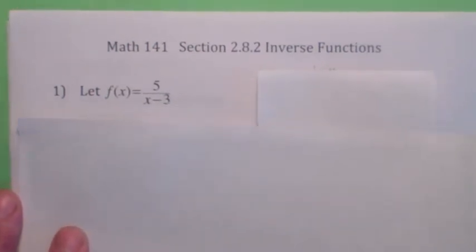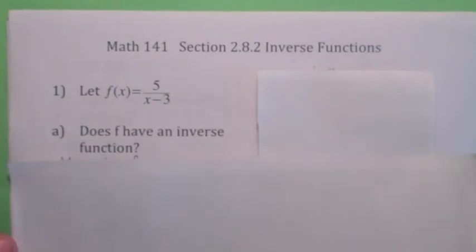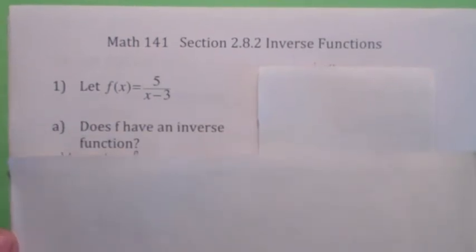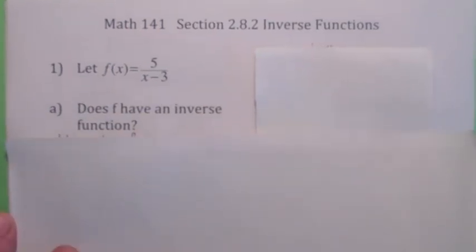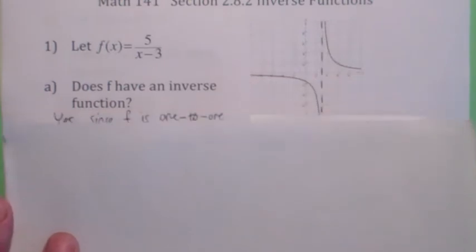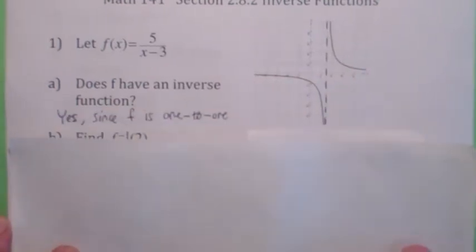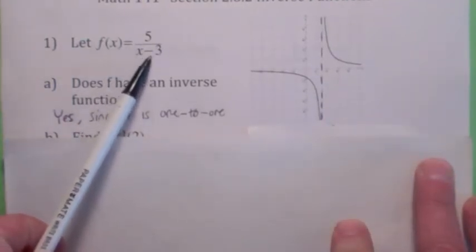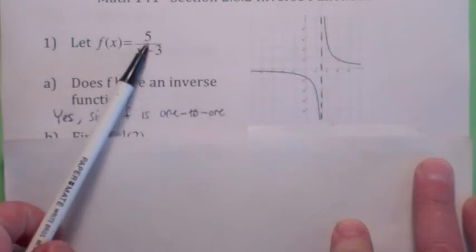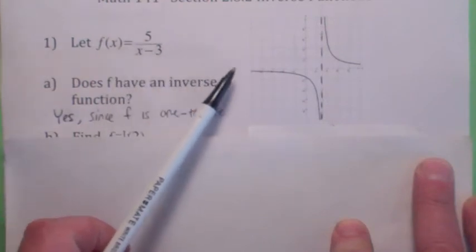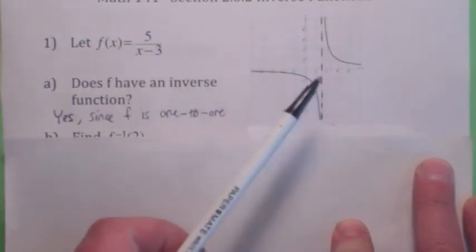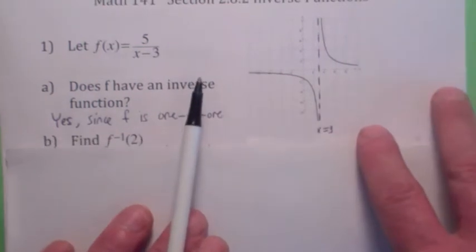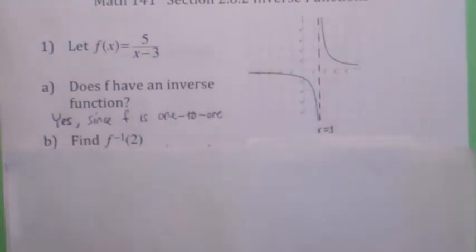Let's look at this function given by a formula. Does this function have an inverse? It would be helpful to look at the graph. You can think of this function as a horizontal shift to the right of one over x — there's also a vertical stretch — but it basically looks like one over x shifted three units to the right, and it is one-to-one. So yes, it has an inverse function.